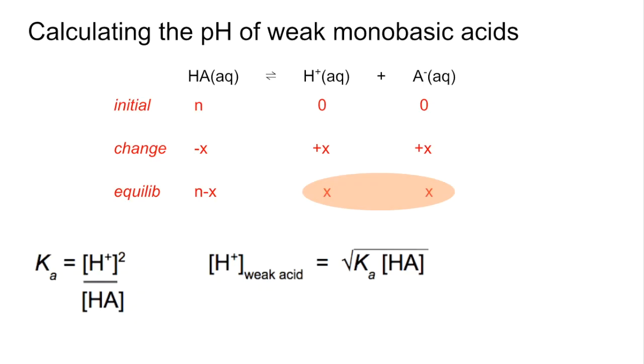Now we've made a little approximation in this. So I'll just quickly go through that. Because that dissociation is so small, we can use the approximation that the HA concentration at equilibrium, so the final acid concentration, is the same as the undissociated concentration of the acid. So we're basically just going to use the original concentration of the acid in the calculation.